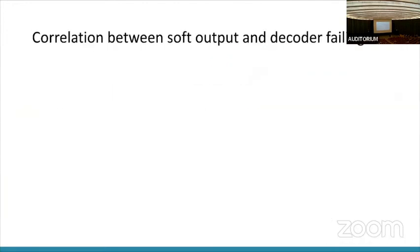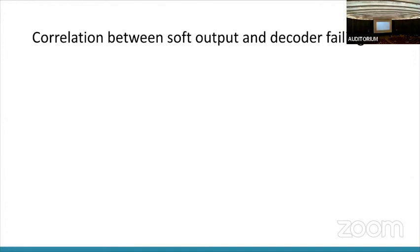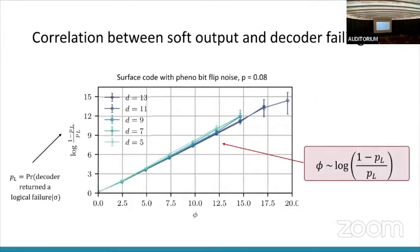This is just an algorithm that we came up with that extracted soft output, but we don't know if it's actually correlated with the decoder failing. So we ran some numerics to see this correlation. We ran simulations where this surface code has phenomenological bit flip noise, and we were able to show this pretty nice correlation between phi, that path length that we defined before, and the log likelihood ratio of the probability that the decoder returned a logical failure given the syndrome.